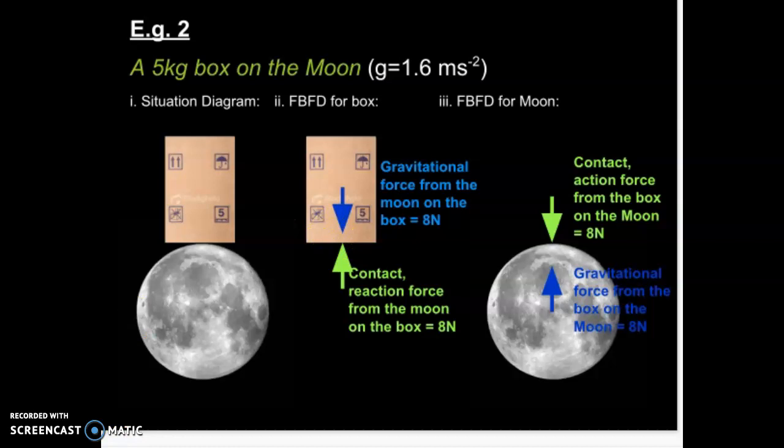Our second free body diagram for this situation is of the moon on its own. Again, this moon is not accelerating anywhere, so it must have a balanced set of forces. Well, think about Newton's third law, equal and opposite.